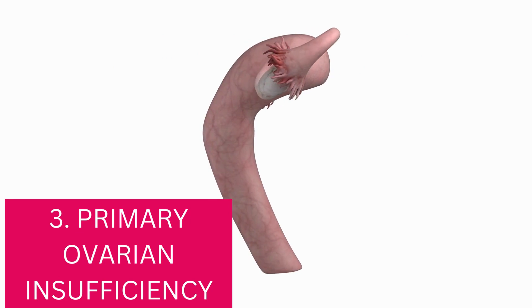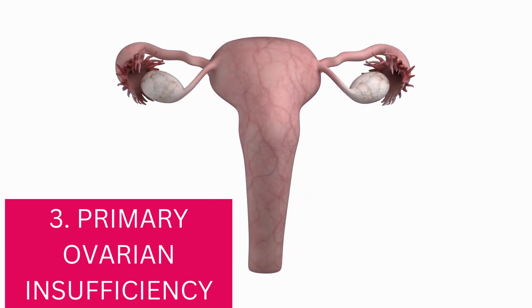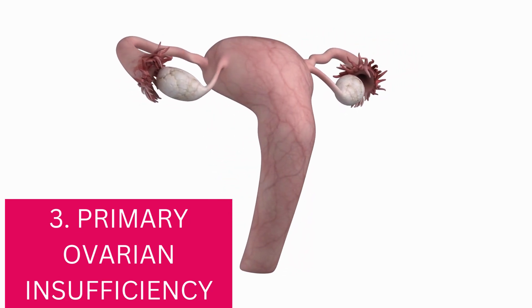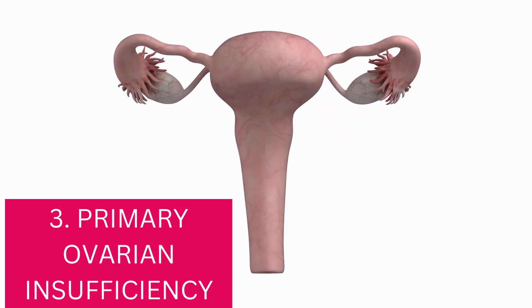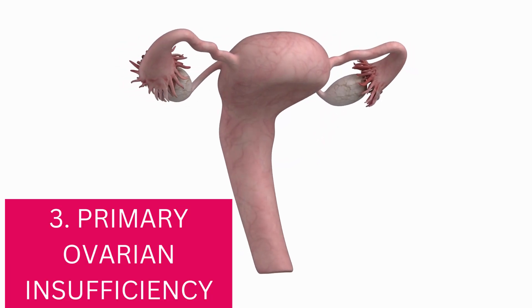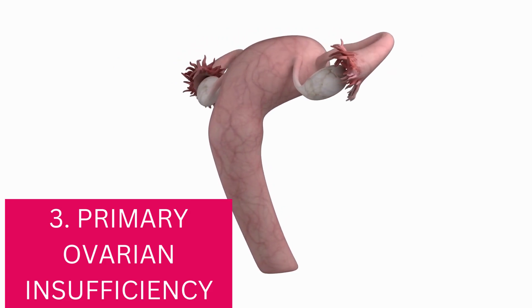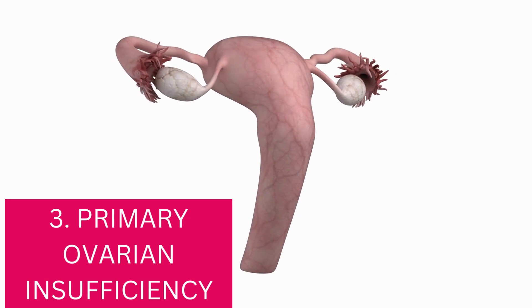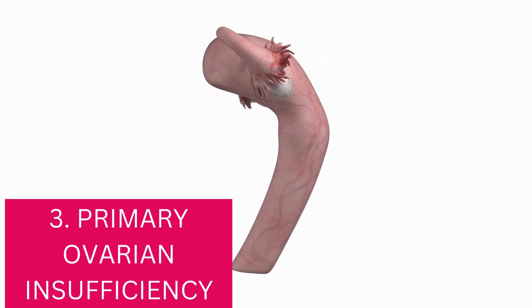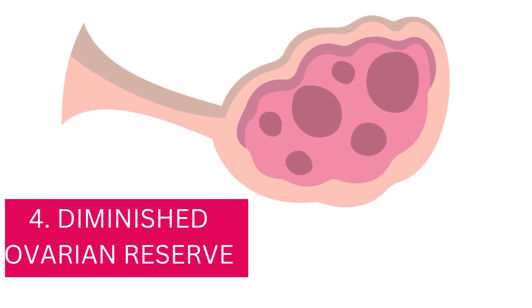Three: primary ovarian insufficiency. This is a condition where a woman's ovaries fail before she's 40 — it's also called premature or early menopause. For some women who experience this, there's no explanation as to why, and for some others it could have been caused by certain medical conditions.